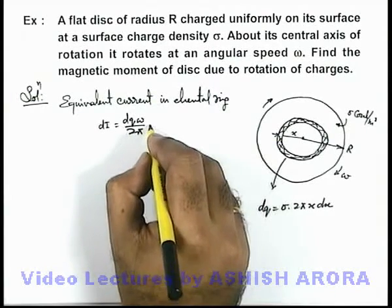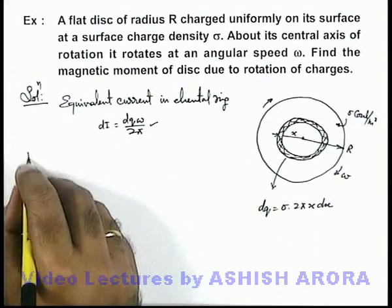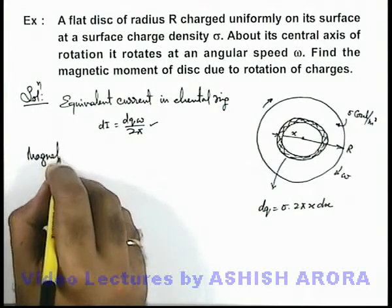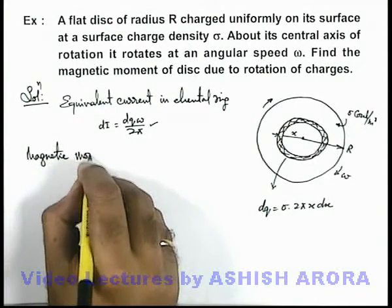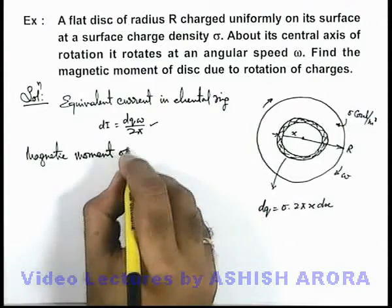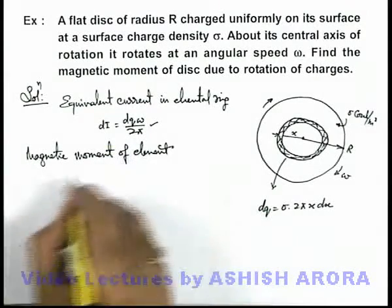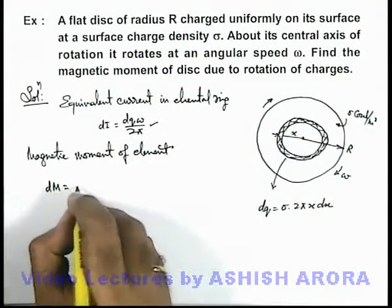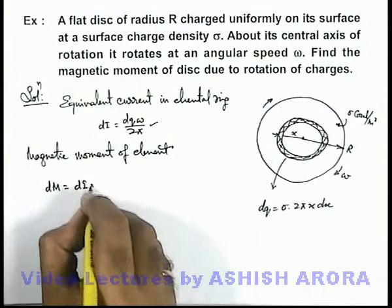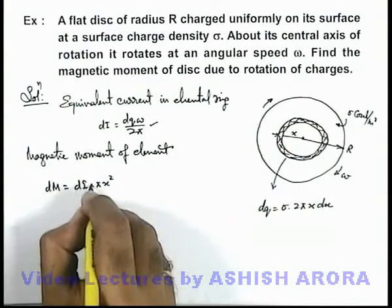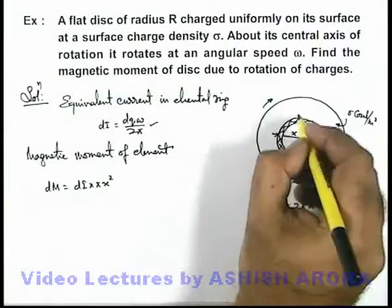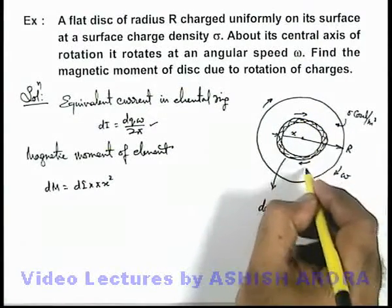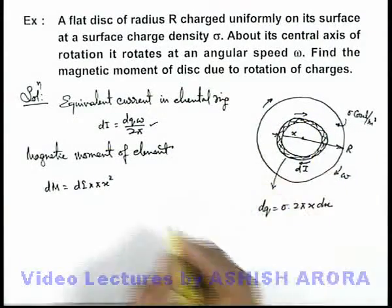So here using this current we can find out the magnetic moment of element, we are talking about this elemental ring which is say dm. So this can be written as di multiplied by πx², because the area enclosed by this circulating current di in this element will be πx².